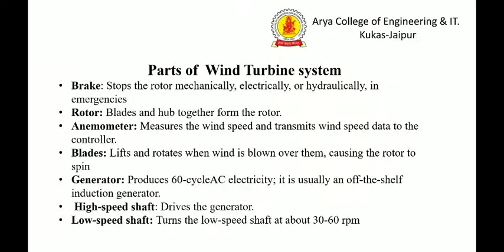Brief description of the parts: Brake — a stop brake that stops the rotor mechanically, electrically, or hydraulically in an emergency. Rotor — blades and hub together form the rotor; it is the rotating part of the wind turbine containing blades and the hub. Anemometer — measures wind speed and transmits wind speed data to the controller. Blades — lift and rotate when wind is blown over them, causing the rotor to spin.